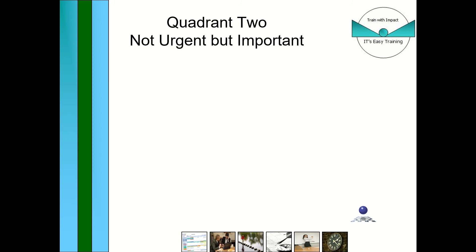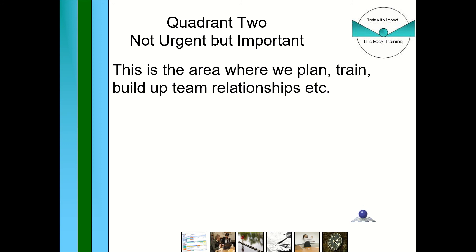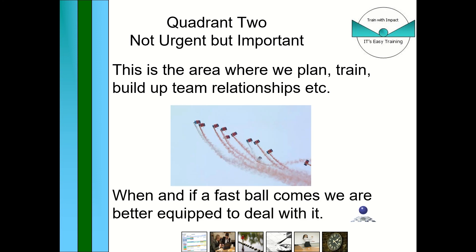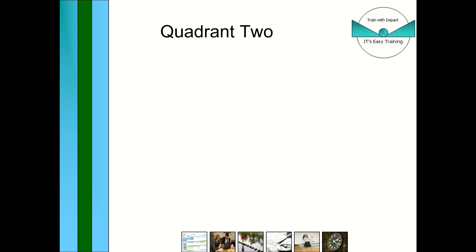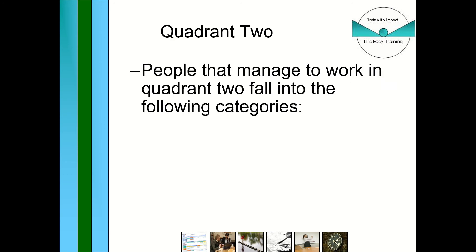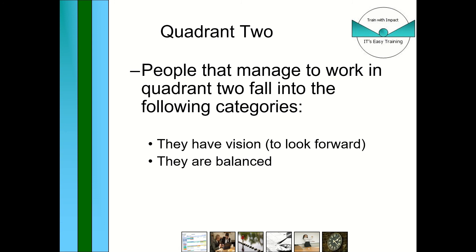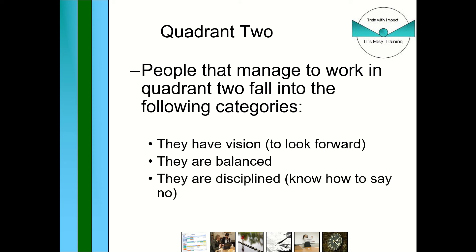Quadrant two is where we should all be trying to work, because you are building relationships, planning and training for things. A bit like the military — they plan constantly and train for events that probably will never happen, but if they do they're able to react because they've built up team relationships. People that manage to work in quadrant two are visionary, looking forward, balanced, know when to say no, and are disciplined.